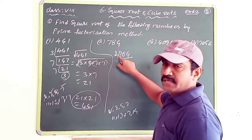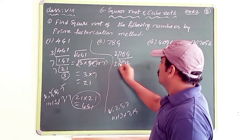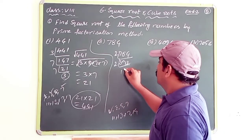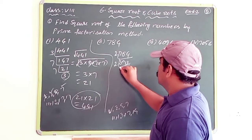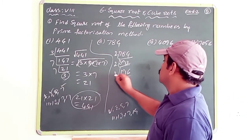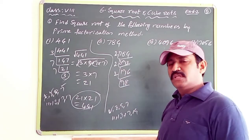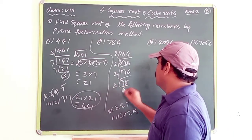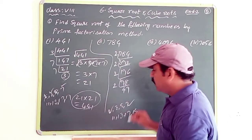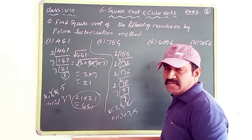Dividing 784 by 2 gives 392. Last digit 2 is even, divide by 2 again to get 196. Last digit 6 is even, divide by 2 again to get 98. Last digit 8 is even, divide by 2 again to get 49. Now 49 is divisible by 7: 49÷7 = 7, and 7 is a prime number. So 784 = 2 × 2 × 2 × 2 × 7 × 7.